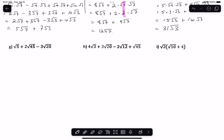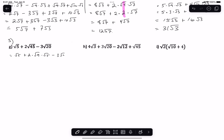This is questions G through I for number 3 on that radical review sheet. So what we're going to do — can't do anything with the square root of 5, so just rewrite that. Plus 2 times the square root of 45 can be rewritten as the square root of 9 times the square root of 5, minus 3 times the square root of 4 times the square root of 5.